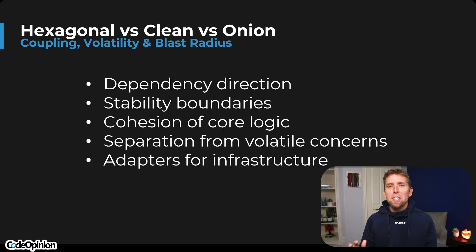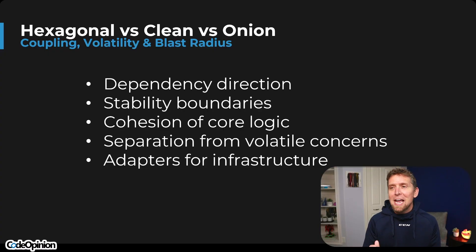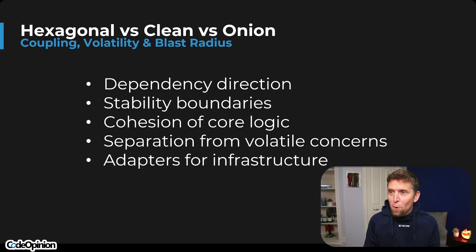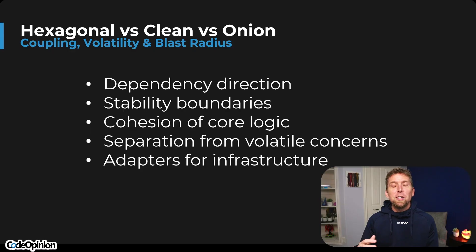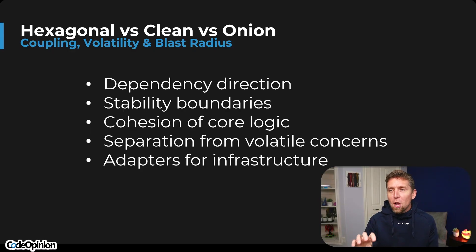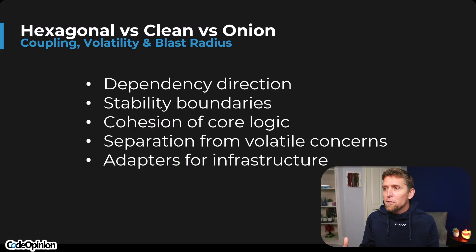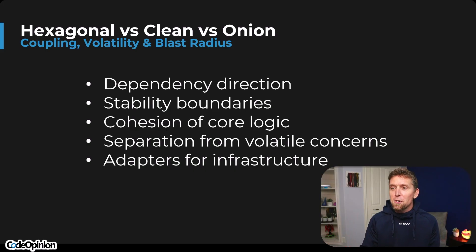Hexagonal, clean, onion — they're all trying to teach you the exact same thing, and kind of force you down a path where appropriate: the dependency direction, stability boundaries, cohesion of that core logic in the middle, what your actual business capabilities of your system are, separation from volatile concerns, and adapters for infrastructure. What does that all mean?